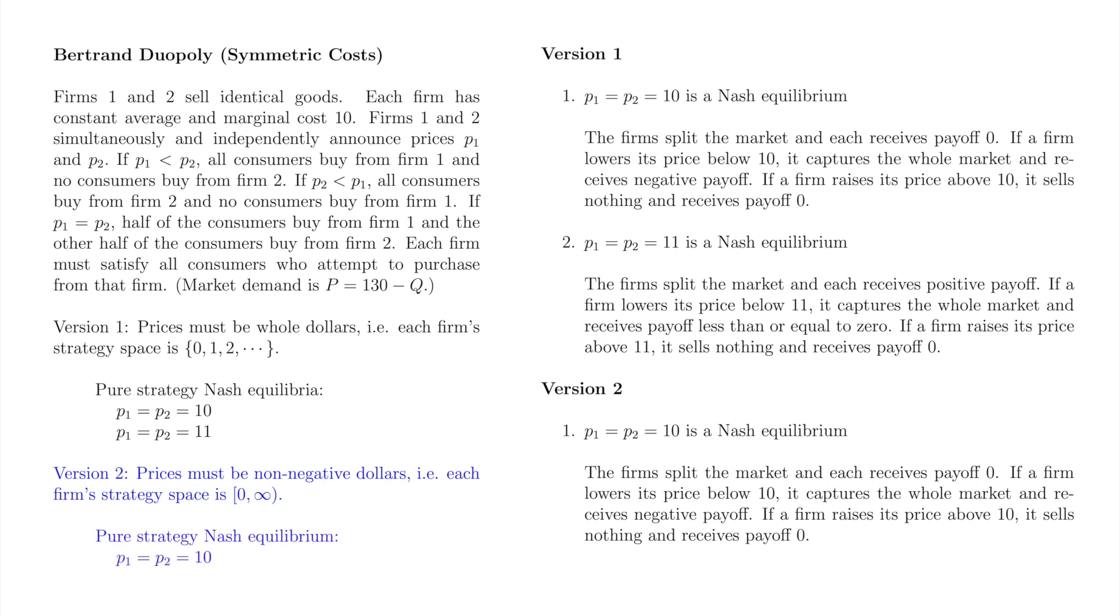The same argument we used to show that 10.10 is a Nash equilibrium in version 1 still holds. However, that's it for Nash equilibria in version 2. If a firm prices even a smidge above 10, say $10.01, the other firm can undercut it while still pricing above 10. In this example, say $10.009. It takes some more work, but we could show that 10.10 is the unique Nash equilibrium in version 2.